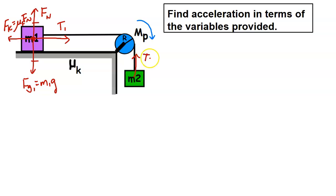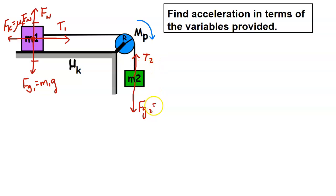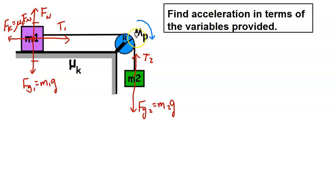For m2 there's a tension force t2 pointing up and gravitational force fg2 = m2g pointing down. Be careful — fg2 is not equal to t2 because m2 is accelerating. The pulley has a radius and a mass, which we'll call mp.